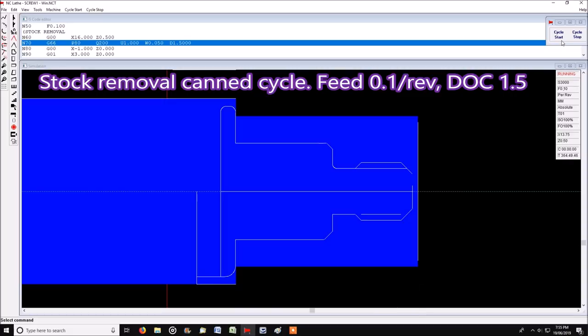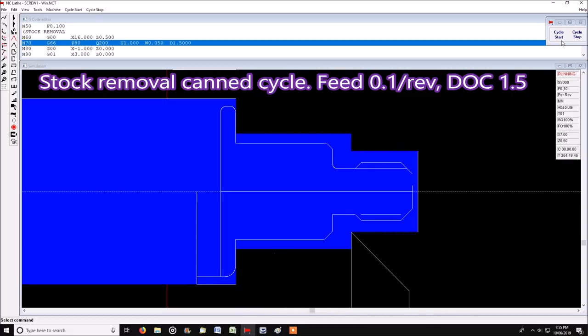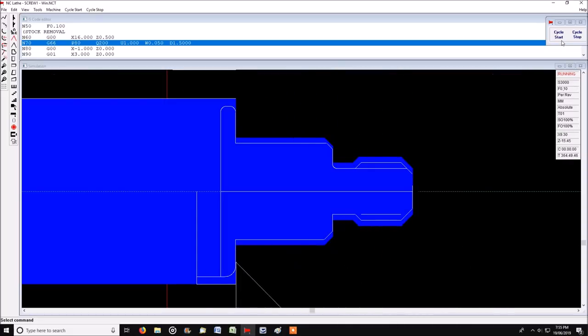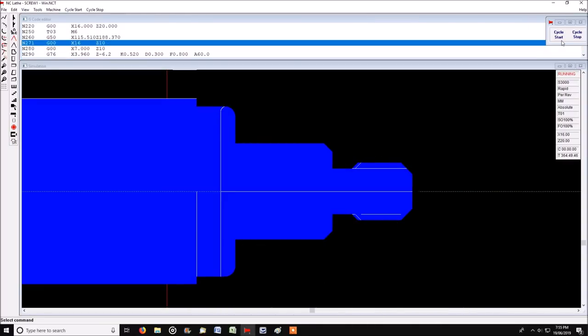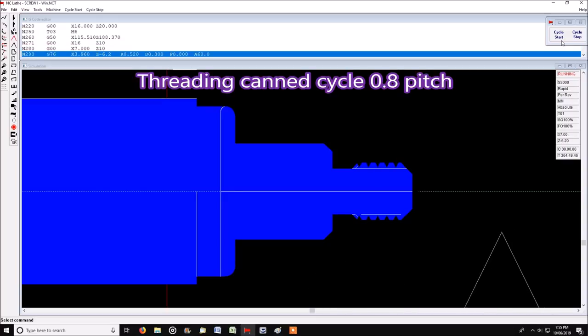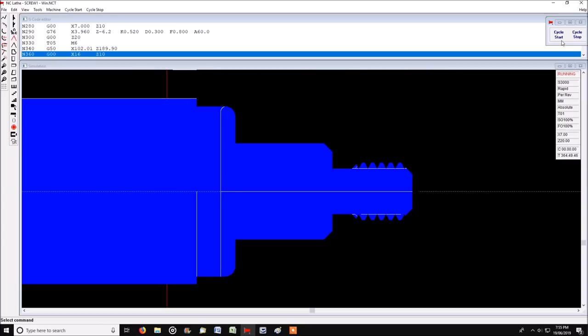That's a canned stock removal cycle, then it cleans up as a finishing cut. Then we thread it and part it off.